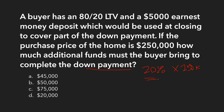250,000 times 20% gives you $50,000. But go back to the question — the buyer already put down $5,000 which counts toward the down payment. So we subtract the $5,000 from $50,000, giving us $45,000. Hopefully you paused and got the right answer; if not, you can see the process here and use it to prepare.